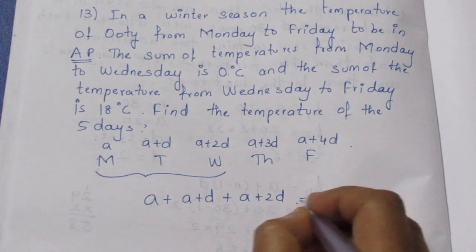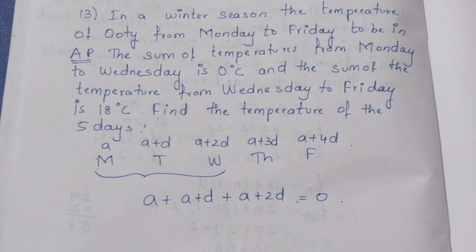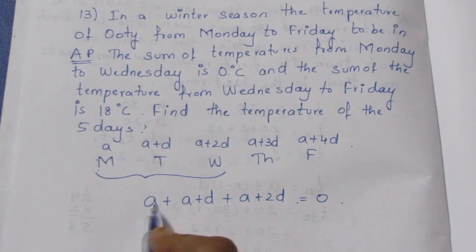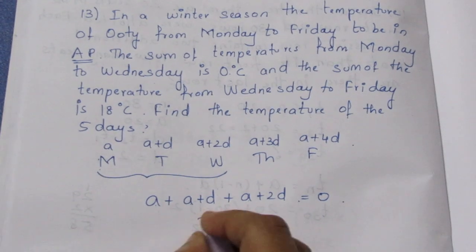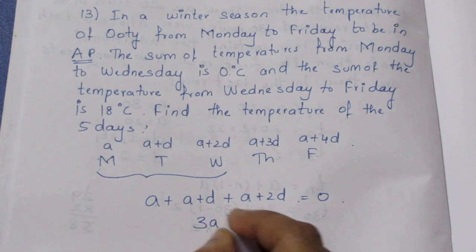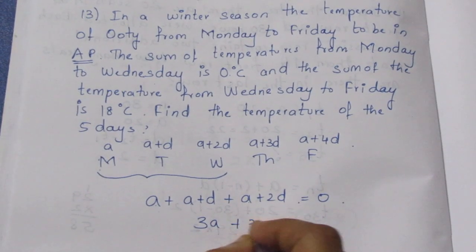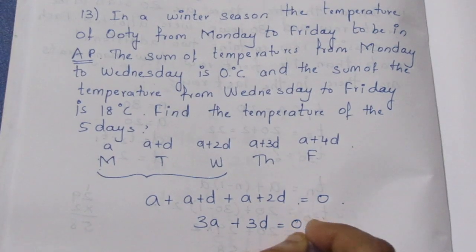When we add those three terms, we get 0. Simplifying: 3a plus 3d equals 0. This is our first equation.